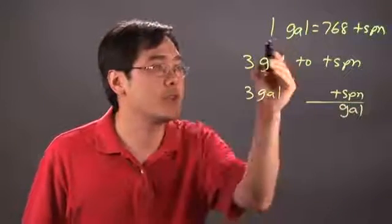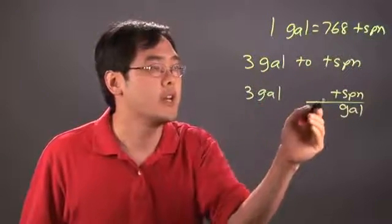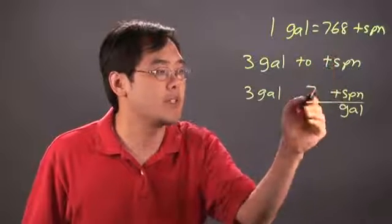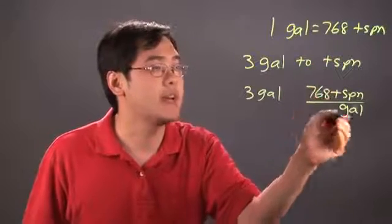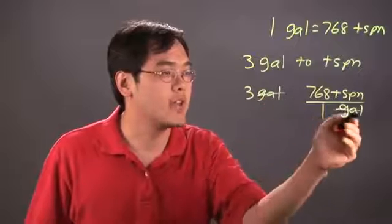Now, you want to plug in the numbers that correspond to it. So, teaspoons is 768, so 768 goes on top. Gallons, you have the 1. The gallons will cancel.